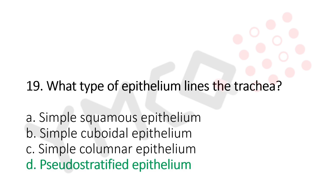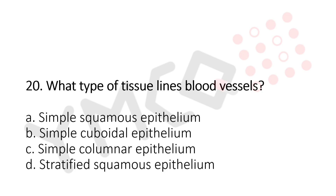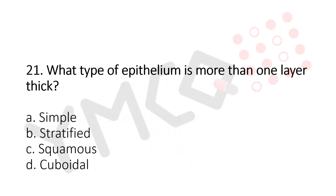Question 20: What type of tissue lines the blood vessels? Option A: simple squamous epithelium. Option B: simple cuboidal epithelium. Option C: simple columnar epithelium. Option D: stratified squamous epithelium. The answer is Option A, simple squamous epithelium.